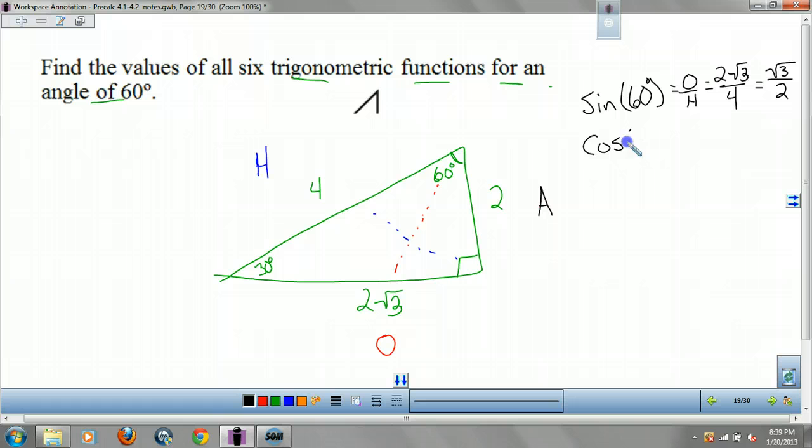So my sine is going to be root 3 over 2. Cosine of 60. Cosine is adjacent over hypotenuse. My adjacent is 2. My hypotenuse is 4. So it's 1 half. Tangent of 60. That's opposite over adjacent. So it's 2 root 3 over 2. So it's just square root 3.